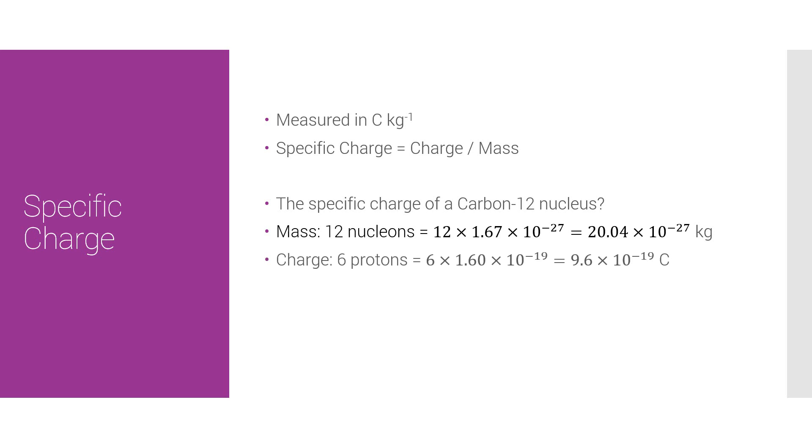The charge of an electron is obviously the same thing but negative, and that equals 9.6 times 10 to the minus 19 coulombs. Now to calculate the specific charge, we just divide the charge by the mass, which gives us the resulting 4.79 times 10 to the 7 coulombs per kilogram.